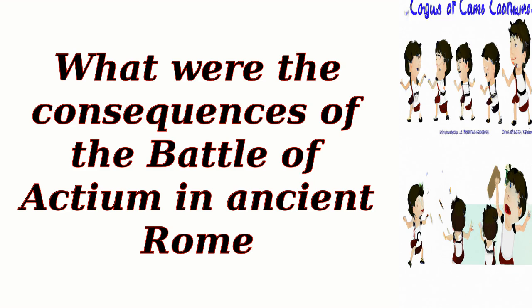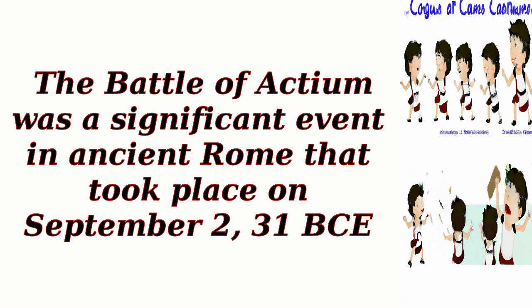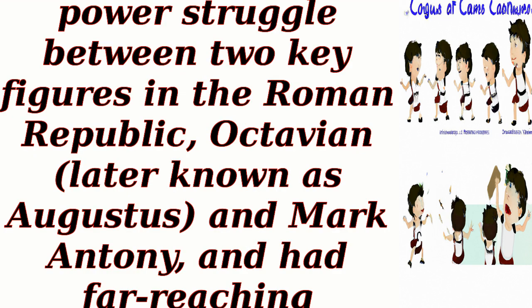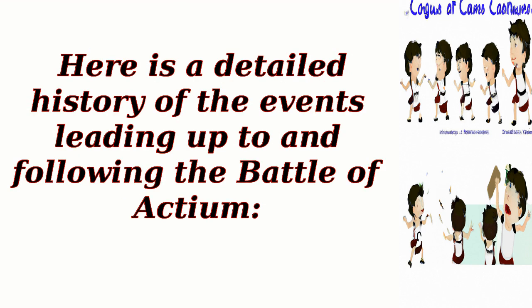What were the consequences of the Battle of Actium in ancient Rome? The Battle of Actium was a significant event in ancient Rome that took place on September 2, 31 BCE. It marked the culmination of a power struggle between two key figures in the Roman Republic, Octavian, later known as Augustus, and Mark Antony, and had far-reaching consequences for the Roman Empire.